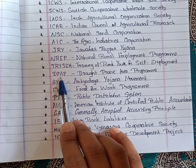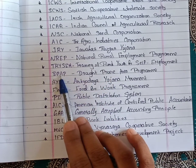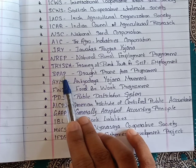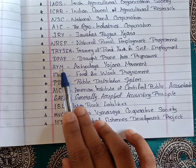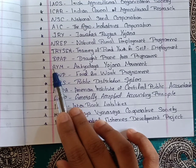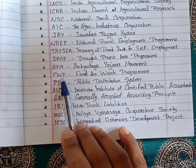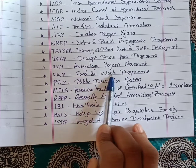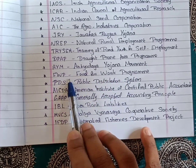Next, DPAP — Drought-Prone Area Program. Next, AYM — Antyodaya Yojana Movement. Next, FWP — Food for Work Program.